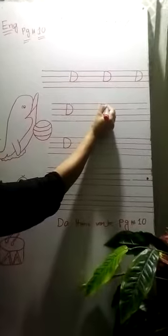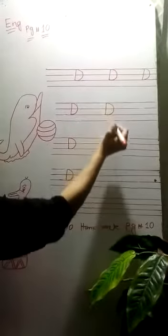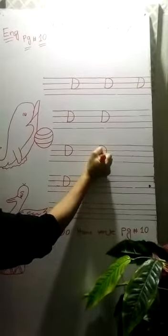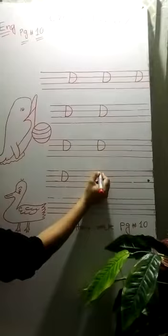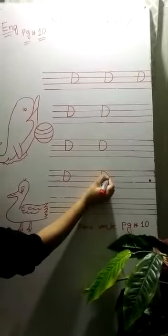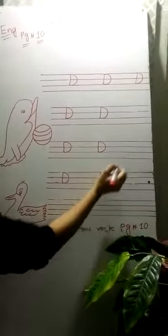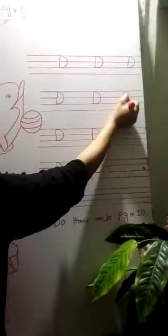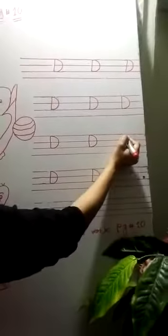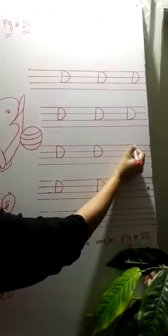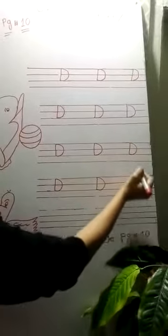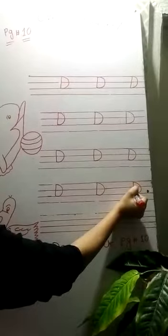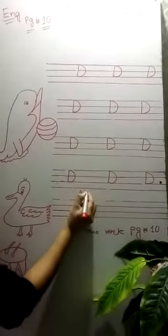Straighten your line. Draw a curve. Draw a standing line, and then draw a curve to the bottom. Straighten your line. Draw a curve. Straighten your line. First three lines, and draw a curve to the bottom. Standing line. Draw a curve. Draw a standing line and then draw a curve.